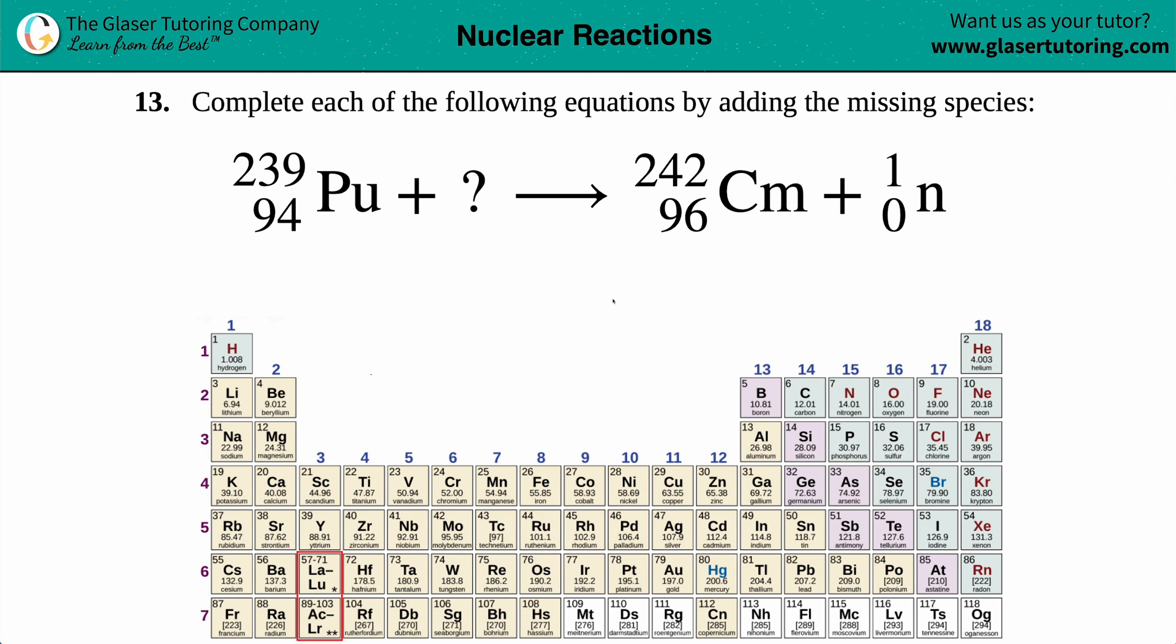Number 13: Complete each of the following equations by adding the missing species. It seems like the missing species for this one is this question mark right here. So we have plutonium which is 239 and 94 atomic number plus something will get me this element, Cm, 242 with a 96, and plus one neutron, letter n for neutron here.